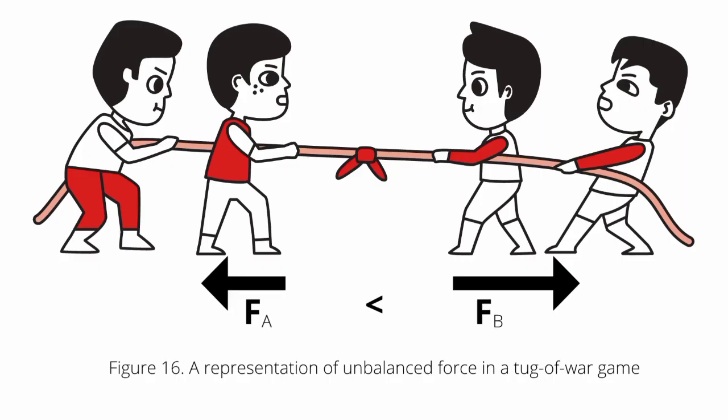Suppose that one of the teams in tug-of-war, as shown in figure 16, exerts greater magnitude of force, F-B, on the ground than the other team, the forces applied on the ground would no longer be equal. One team would be able to pull the other team in the direction of the larger force.